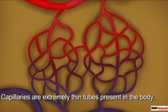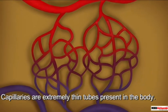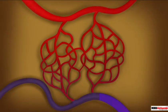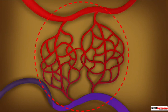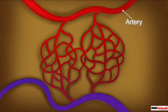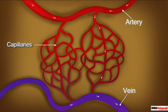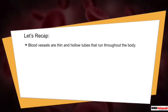The next type of blood vessel is capillaries. You can see in the picture — capillaries are extremely thin tubes present in the body which connect the artery and the vein. The function of the capillaries is to transport blood from the artery towards the vein. Like veins, capillaries too have thin walls.